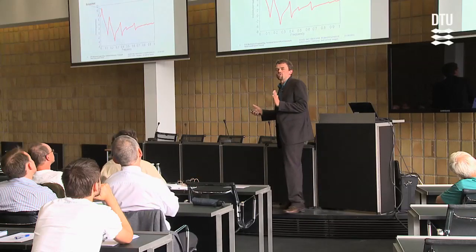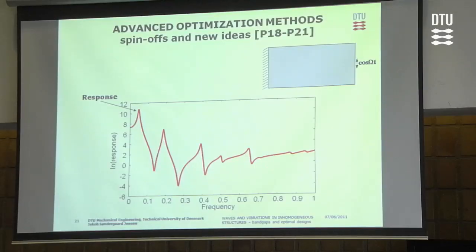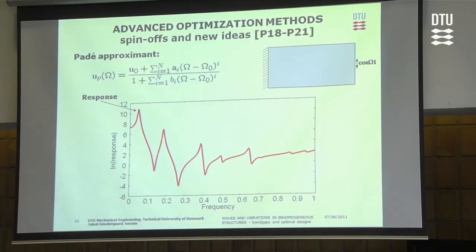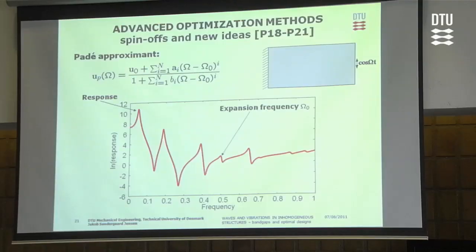The photonic and phononic crystal work led to new optimization procedures. One problem encountered is that optimizing over frequency ranges requires evaluating the response at many single frequencies — very expensive. We could use the Padé approximant very accurately to approximate the response over a large frequency range efficiently. Choosing an expansion frequency and a number of expansion terms — for just 2, 3, 4, or 5 terms — you get very nice agreement over a large frequency range, enabling efficient frequency range optimization.